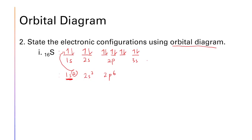Continuing sulfur's orbital diagram: 3s has 2 electrons (one up, one down). For 3p with 4 electrons: one up in each of the three orbitals first (parallel), then pair up the fourth in the first orbital. That is the complete orbital diagram for sulfur.